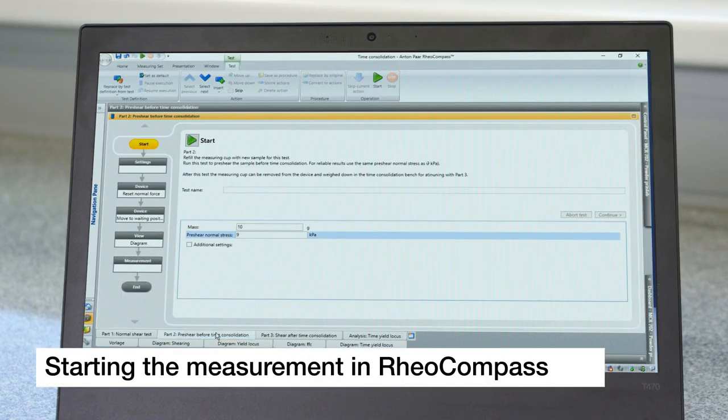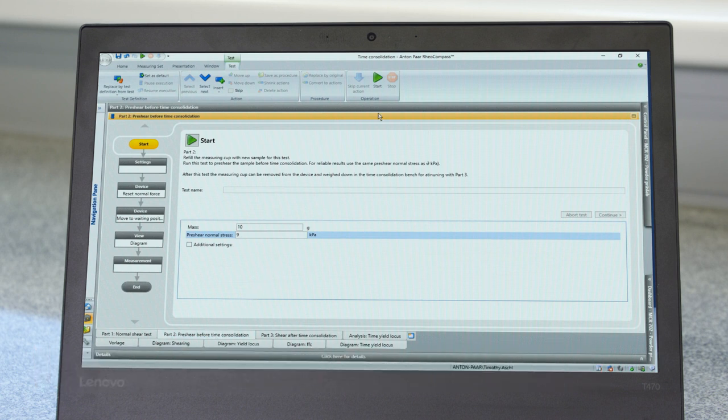Then set the measurement parameters in the tab, Part 2, to pre-shear the sample.